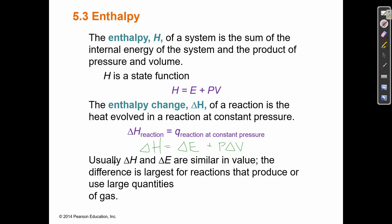Delta H and delta E are generally similar in value. The internal energy E is the sum of all potential and kinetic energy inside the sample. Generally E and H, the enthalpy, are similar in value—H is kind of like the internal energy. But it also has this other component, P times delta V, which is similar to work. So at constant pressure, if there's a volume change, that will make H a little bit bigger than delta E.